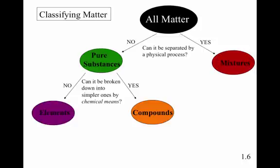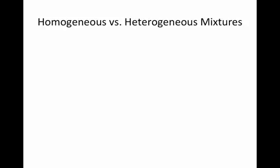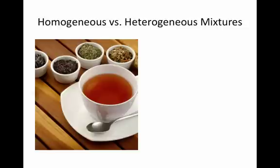We also can further classify mixtures as homogeneous mixtures and heterogeneous mixtures. A homogeneous mixture is something that is uniform throughout. So if you look at this tea, this is a mixture of water and tea. We may have added sugar. We may have added lemon juice. But if you look at this tea, it's uniform throughout. We can also call this a solution.